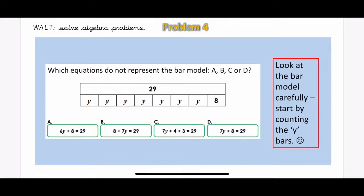Now it could be one that doesn't represent it, it could be two of them, three of them, or it could be all four of them. So look really carefully at the bar models and also at the equations underneath, and have a look at which ones do and do not represent the bar model. I would start by counting the Y bars.